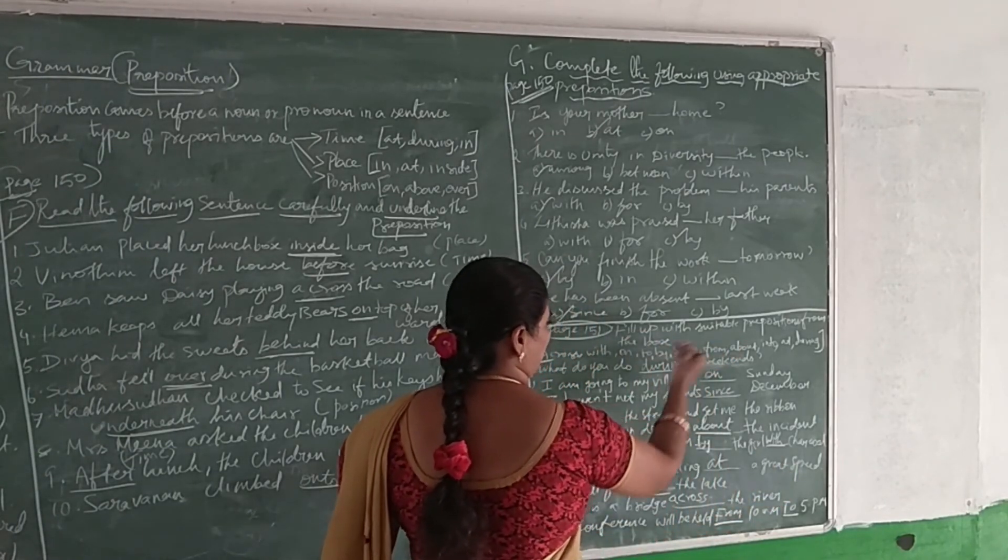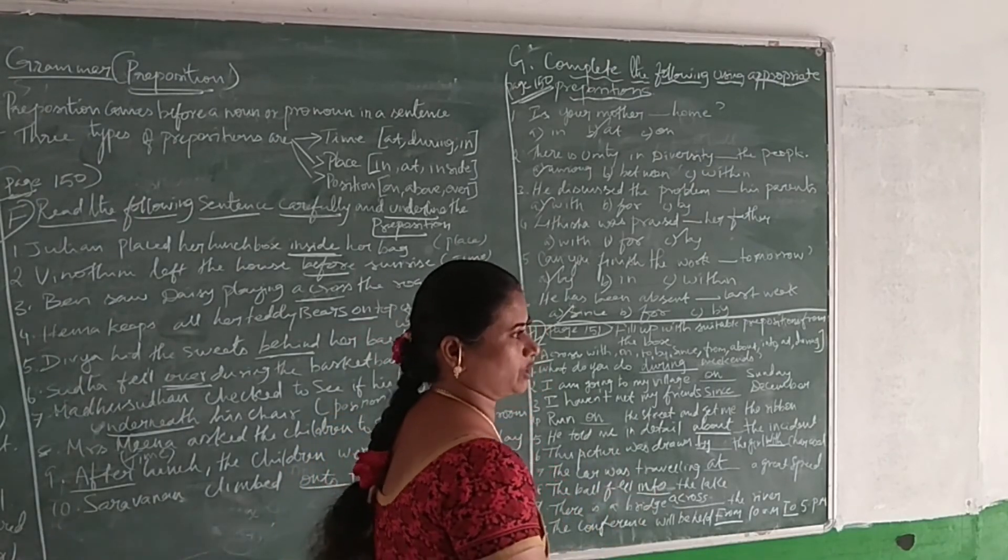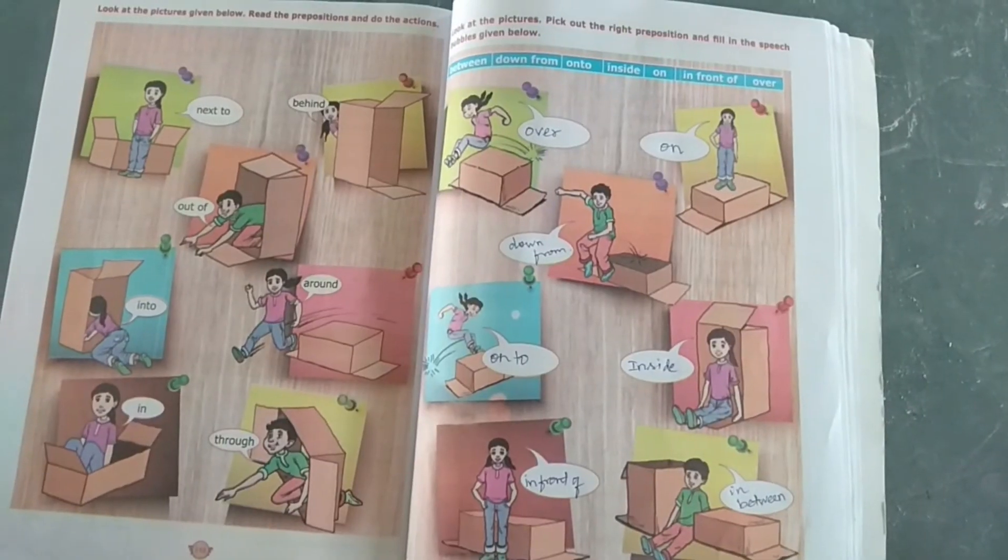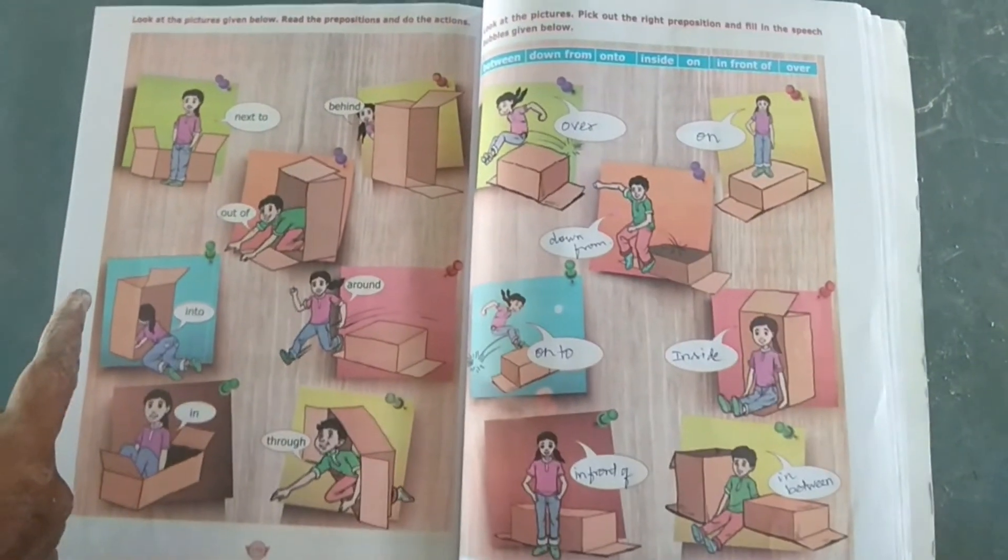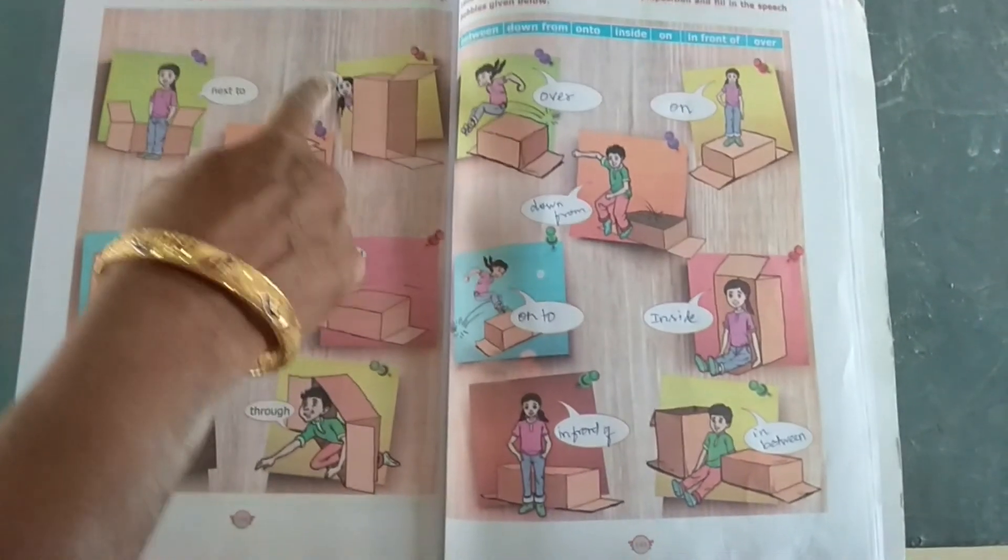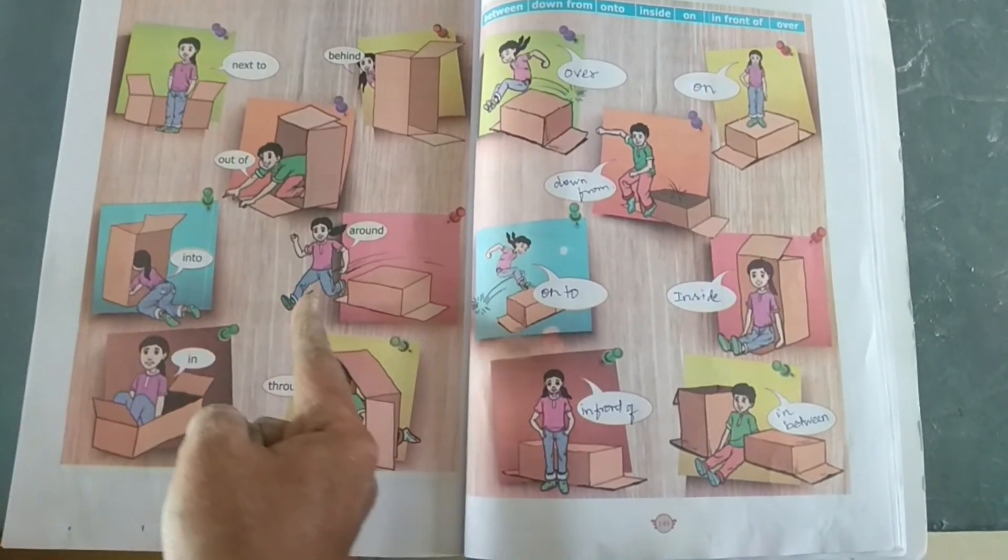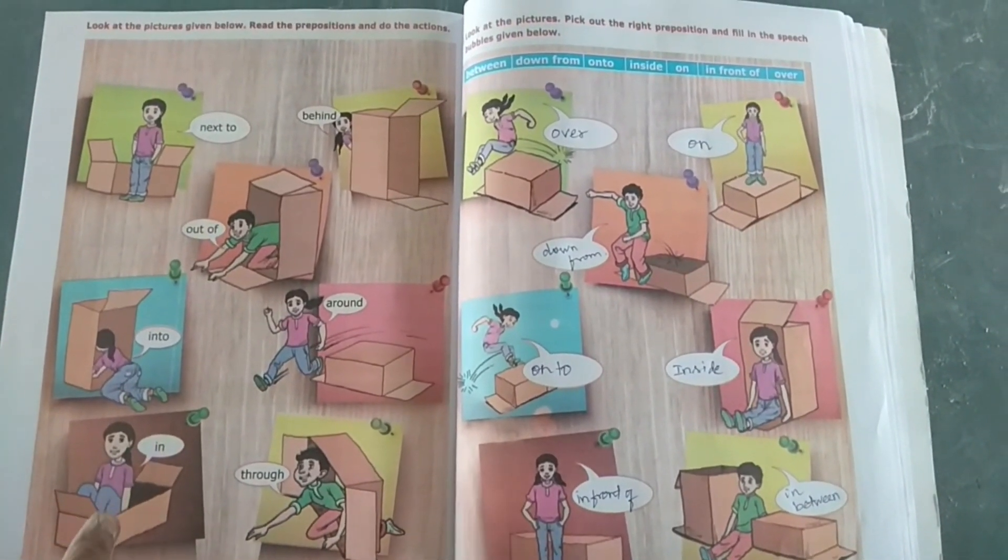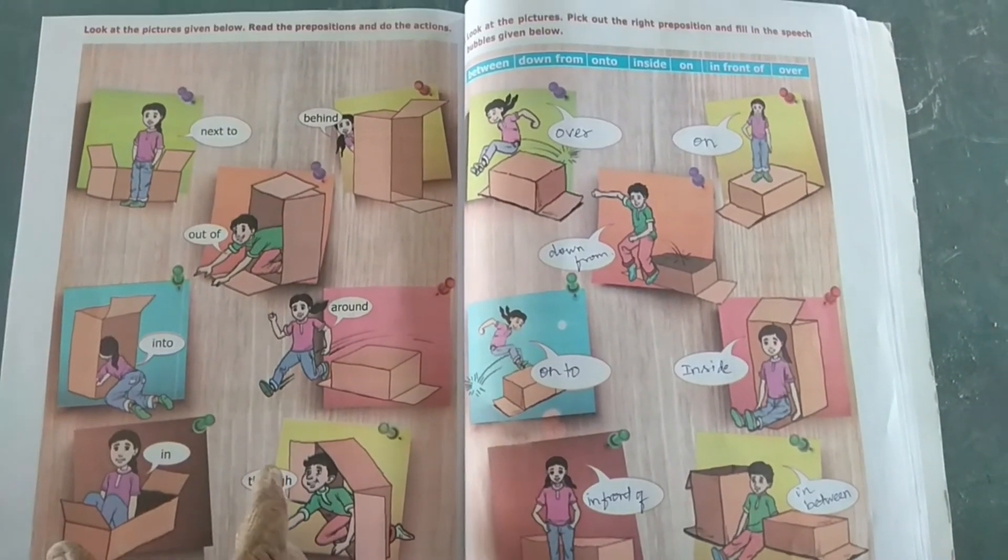When below, read the prepositions and do the actions. Students, they have given you some pictures along with the prepositions. Here the box is given: she is standing next to the box, the girl is hiding behind the box, this boy is coming out of the box, the girl is going into the box, this girl is running around the box, she is sitting inside the box, and this boy is going through the box from one side to another side. They have given the preposition words and the pictures.